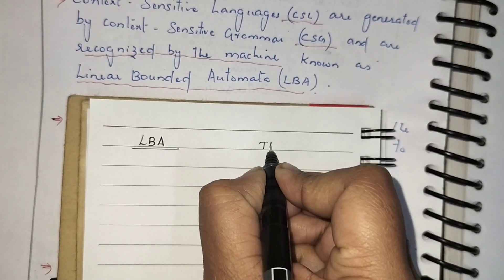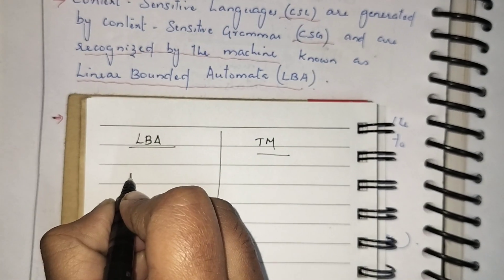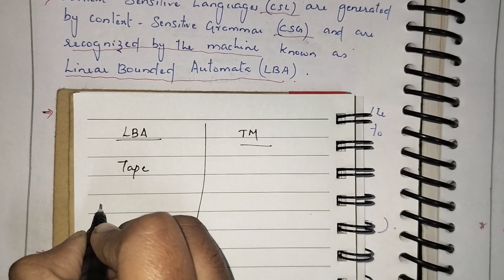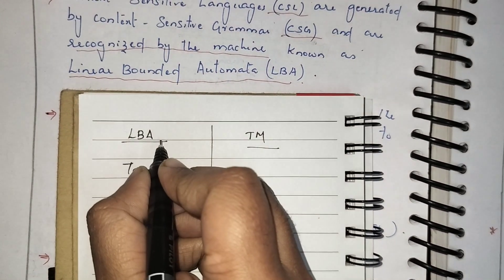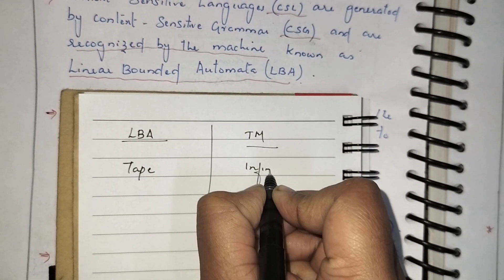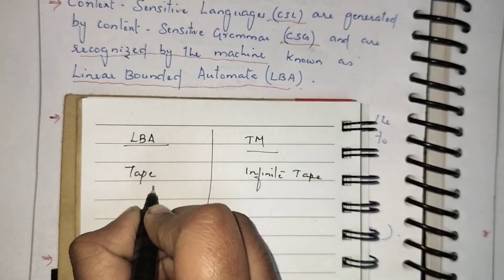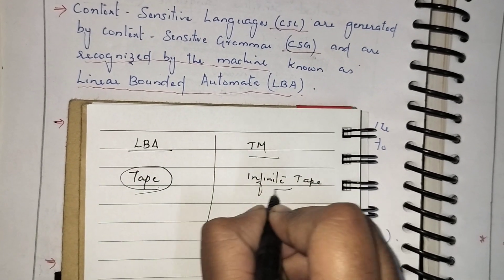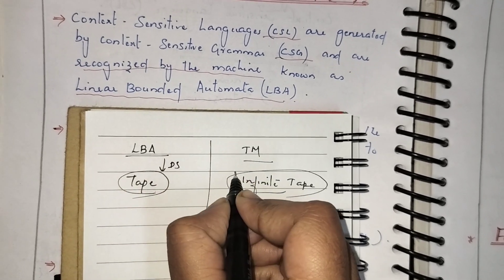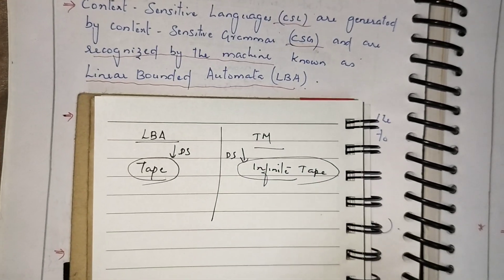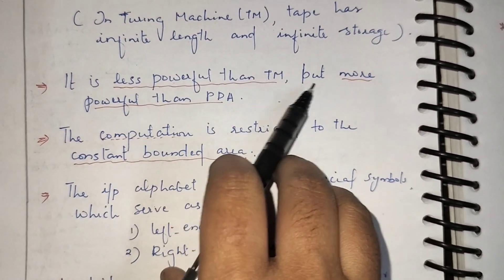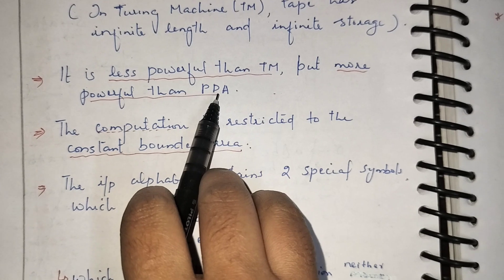In the case of linear bounded automata and Turing machine, both use the tape data structure. Push down automata uses a stack data structure. Linear bounded automata also uses a tape data structure, but for Turing machine it is an infinite length tape, whereas for linear bounded automata the length of the tape is fixed. It is less powerful than Turing machine but more powerful than push down automata.